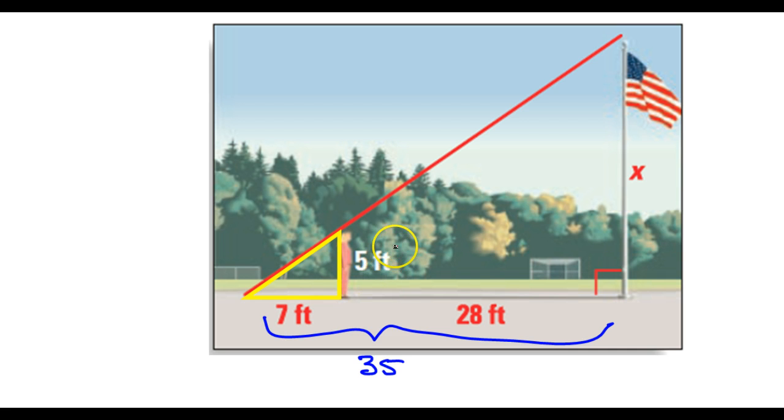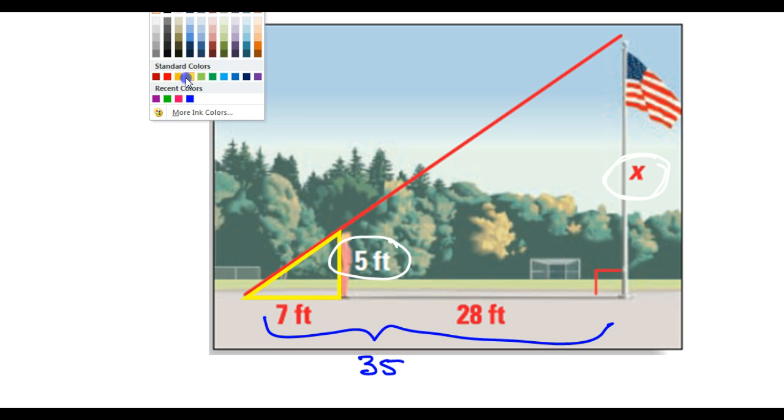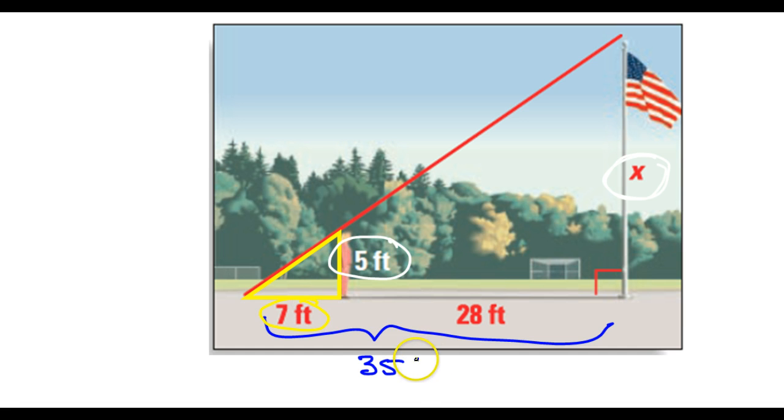So when you set up your proportion, of course these lengths will be corresponding sides. But then also these lengths, the 7 and the 35 will be corresponding sides, not the 28. So when you set up your proportion, it's going to look like this.